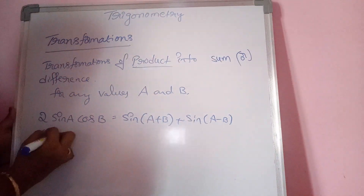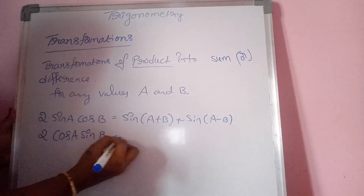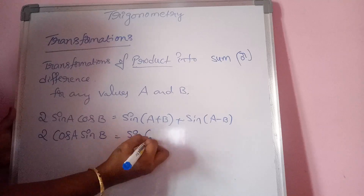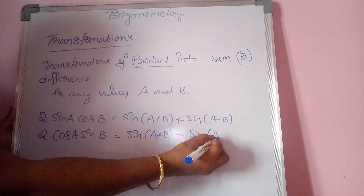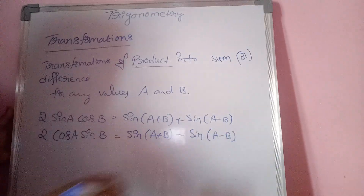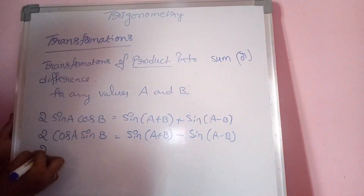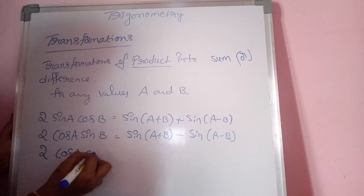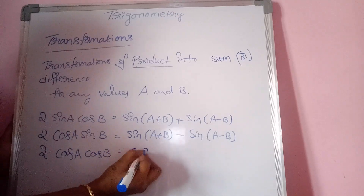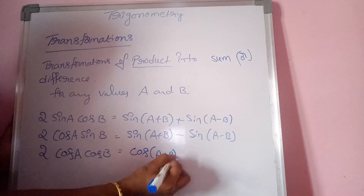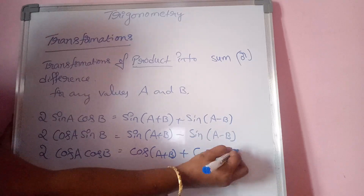The second formula: 2 cos A sin B is equal to sin(A+B) minus sin(A−B). This gives the difference of two trigonometric functions. The third formula: 2 cos A cos B is equal to cos(A+B) plus cos(A−B).